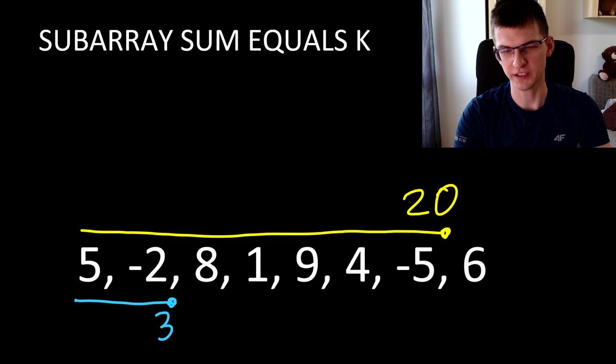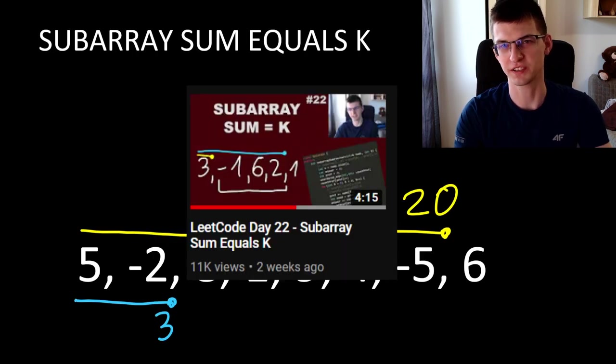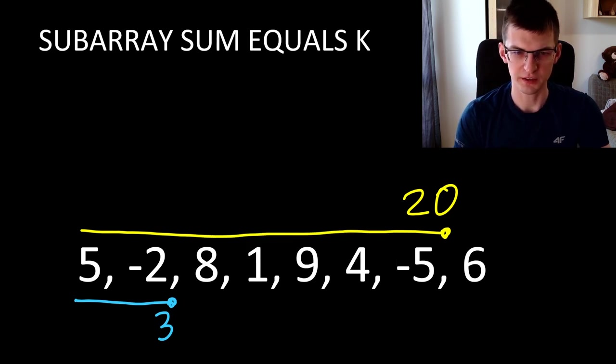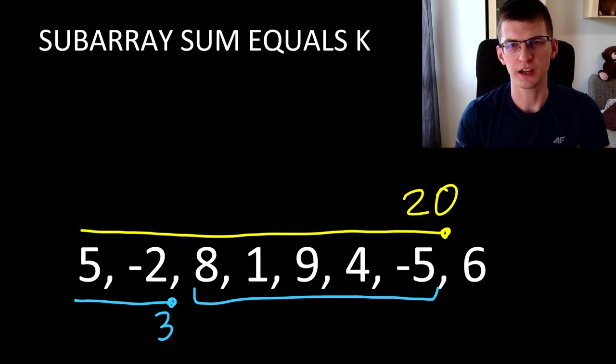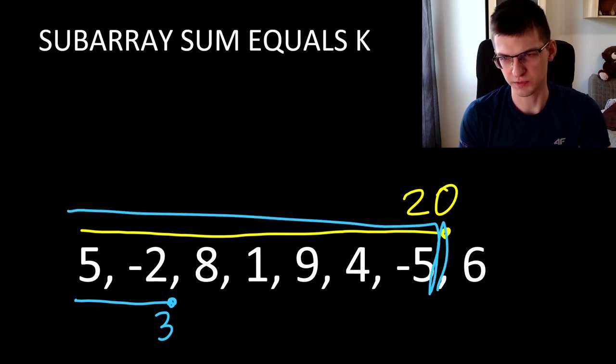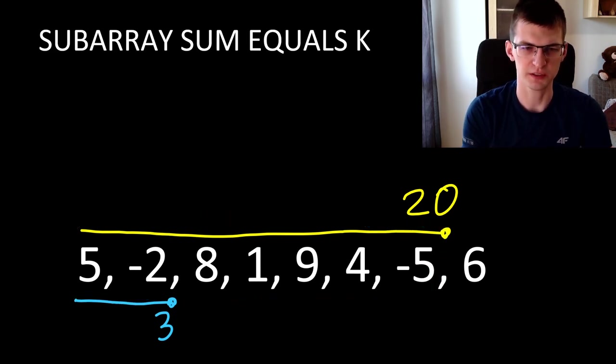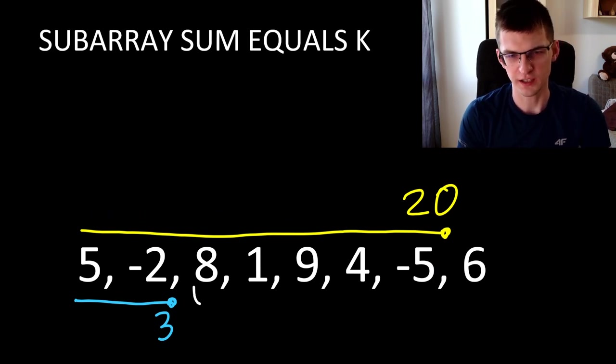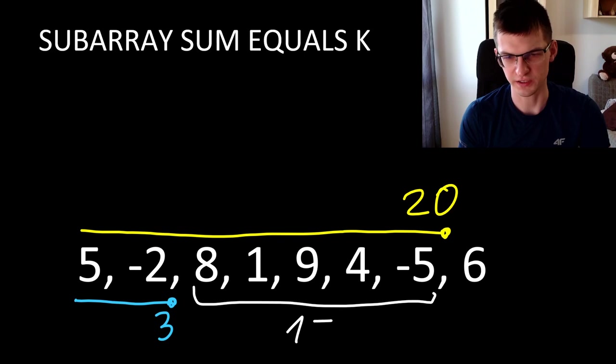It is helpful here to know an easier problem, subarray sum equals k. I covered it a few weeks ago, you can watch that video if you want. In short, the main trick was that every subarray is equal to a difference of two prefix sums. If sum of elements from beginning to this position is 20 and sum of those elements on the left is 3, then this subarray is the difference of two prefix sums. 20 minus 3 is 17.